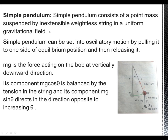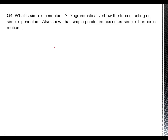A simple pendulum can be set into oscillatory motion by pulling it to one side of its equilibrium position and then releasing it. We displace the simple pendulum from its position and release it, so it will oscillate and vibrate. We have to prove that this oscillation is simple harmonic motion. We can see diagrammatically how many forces are acting on it.